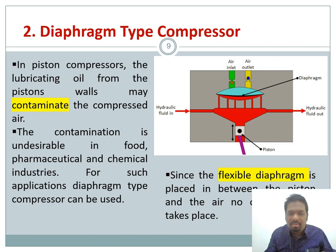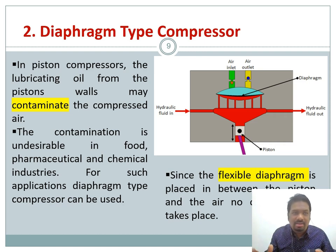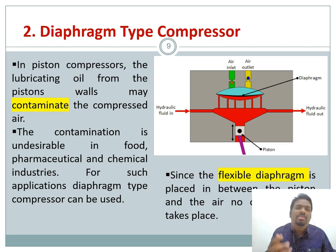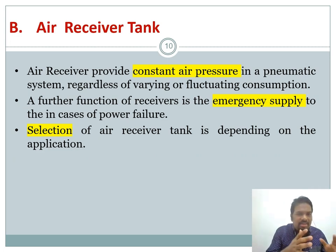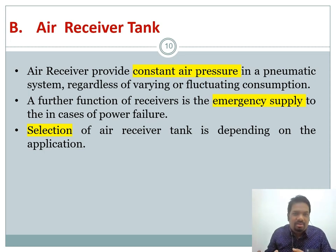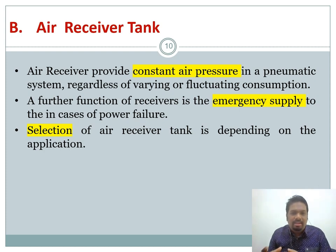Apart from piston type and diaphragm type, there are other types of compressor such as rotary compressors. Once the air is compressed, it passes to the air receiver tank. From the name itself, you know it receives and stores compressed air for use in different applications. The air receiver provides constant air pressure — when you have pulsating air, it can disrupt your system, so the receiver tank delivers a constant air pressure supply.